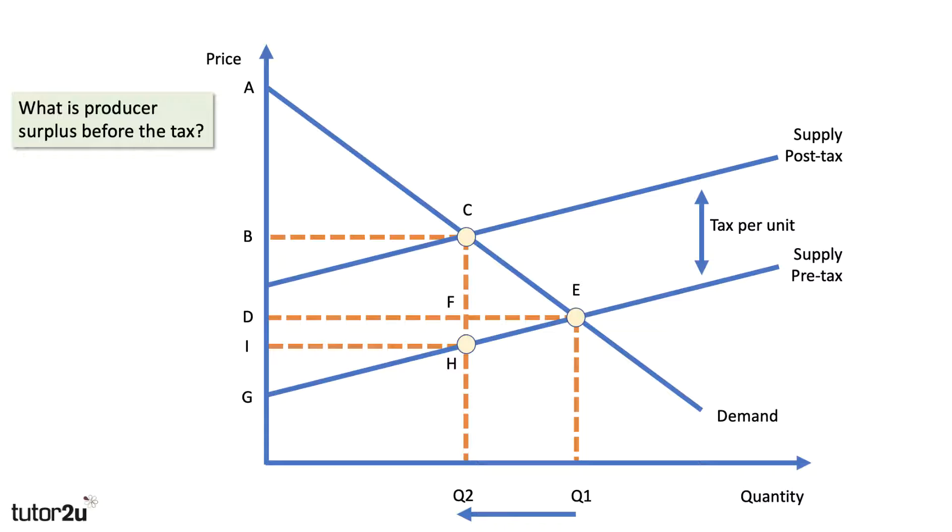If you have a series of questions, do press that pause button on the video if you want to have a go as we work our way through this little problem. So what is the producer surplus before the tax? Well, it's the area above the supply curve and below the price. The price originally was D, quantity Q1, and the area is D, E, G, the area above the supply curve and below the price that people are paying.